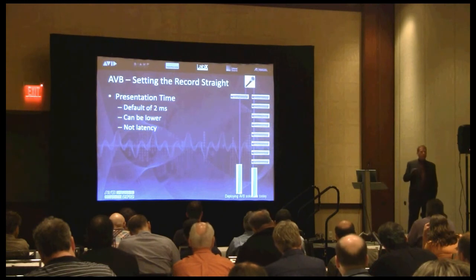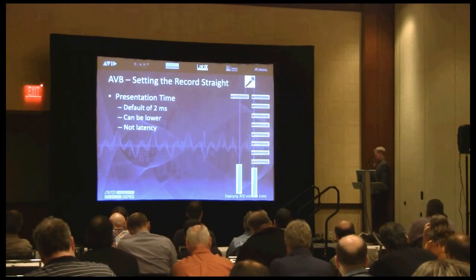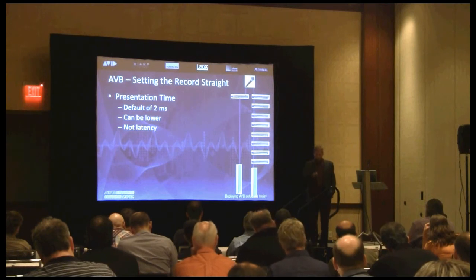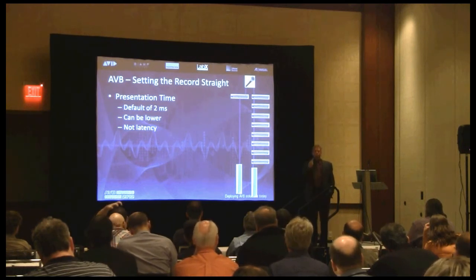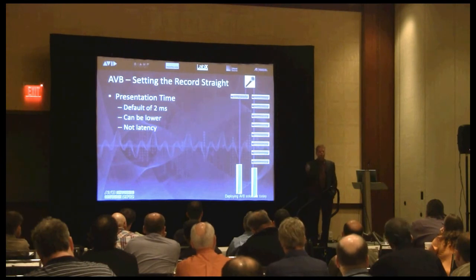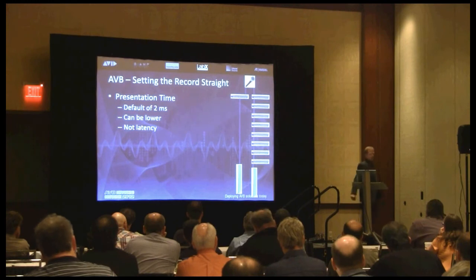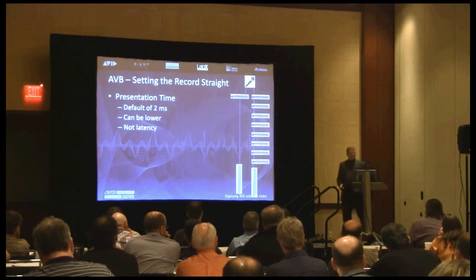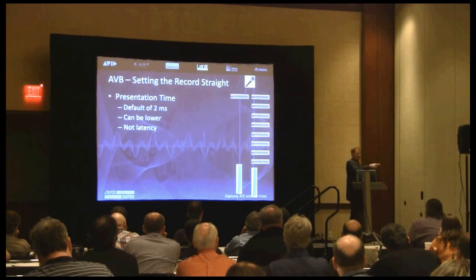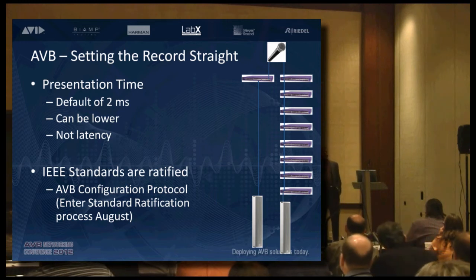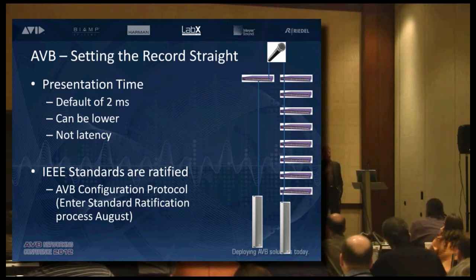Presentation time has a default setting of two milliseconds to account for transport delays through switches, but that's really overkill. It was designed by IEEE guys who needed to pick numbers somebody could test to: two milliseconds over seven hops at 100 megabits. If you're on gigabit, you can go through a lot more hops without hitting two milliseconds. Presentation time is there as a fundamental benefit so you don't need to worry about the network topology.